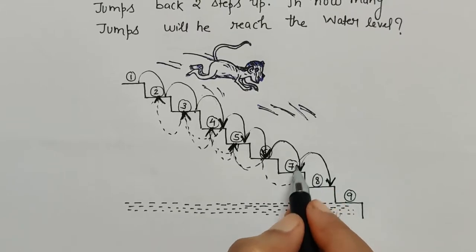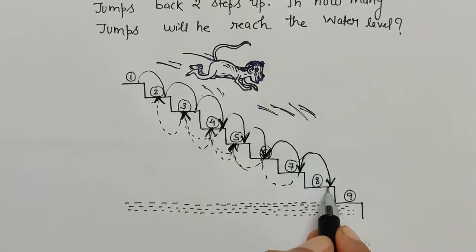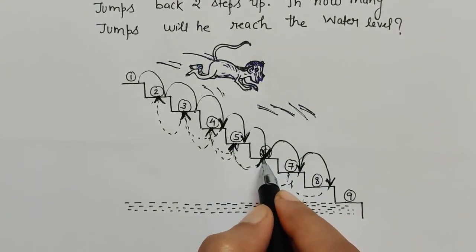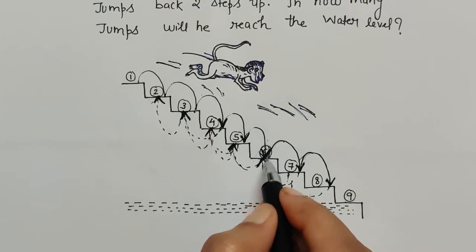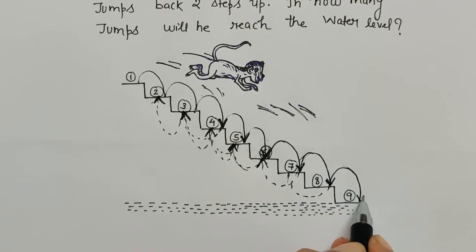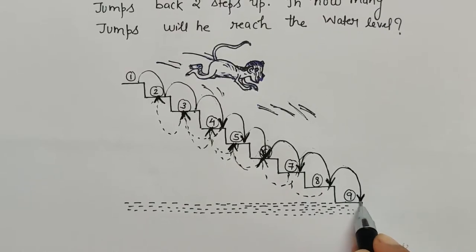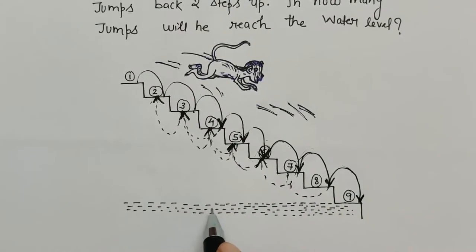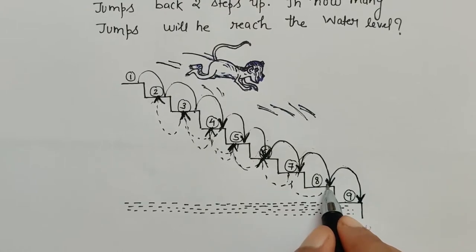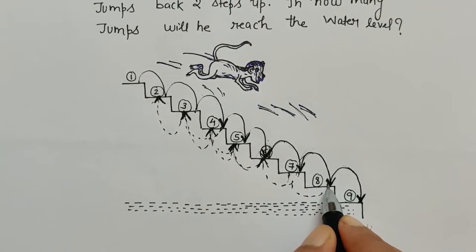Again the monkey moves upward by two steps — one, two. This was the sixth step. From the sixth step, again three steps down — one, two, three — and this was the destination, the water level, shown by the dotted lines. The monkey has reached. We now just count the arrows to get the total number of jumps in downward and upward direction.